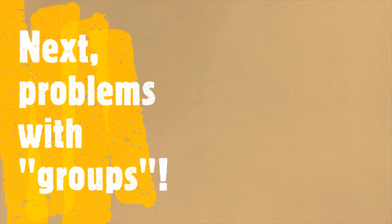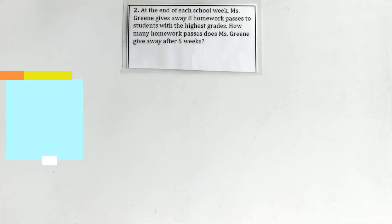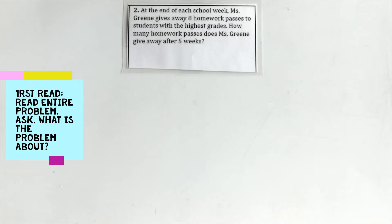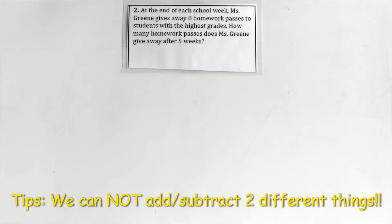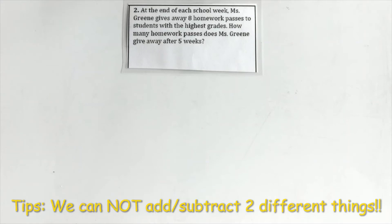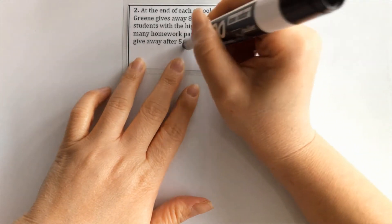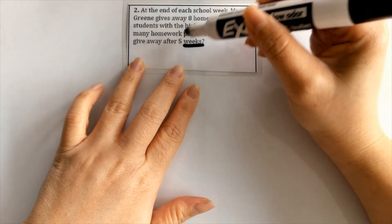Now let's look at multiplication or division problems. 'At the end of each school week, Ms. Green gives away eight homework passes to students with the highest grades. How many homework passes does Ms. Green give away after five weeks?' Is this combining, comparing, or groups? I don't see combining — we can't add homework passes and weeks together. That's actually a red flag: when you're adding two different things, you can't do that. This has to do with groups.